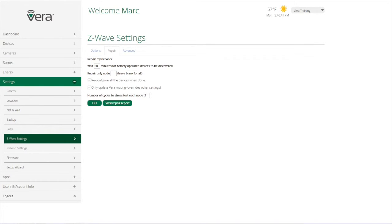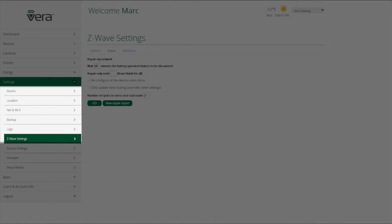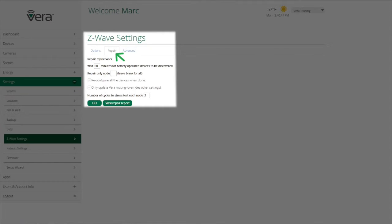The last step in adding a new device or devices is to go to Settings, select Z-Wave Settings, and click on Repair. And what we're going to do is update our entire Z-Wave network so that the network knows where to find these new devices and knows what other devices these devices can talk to.